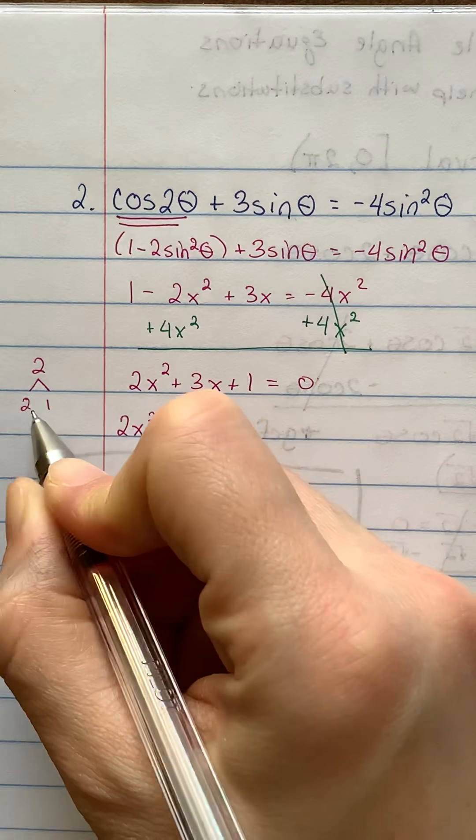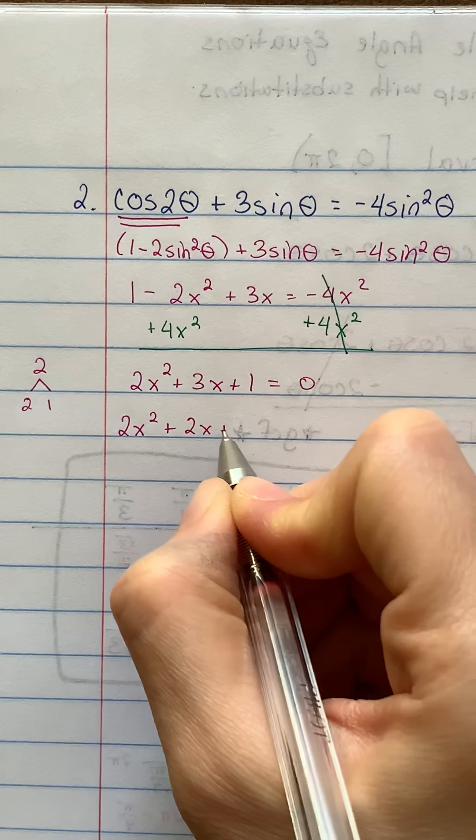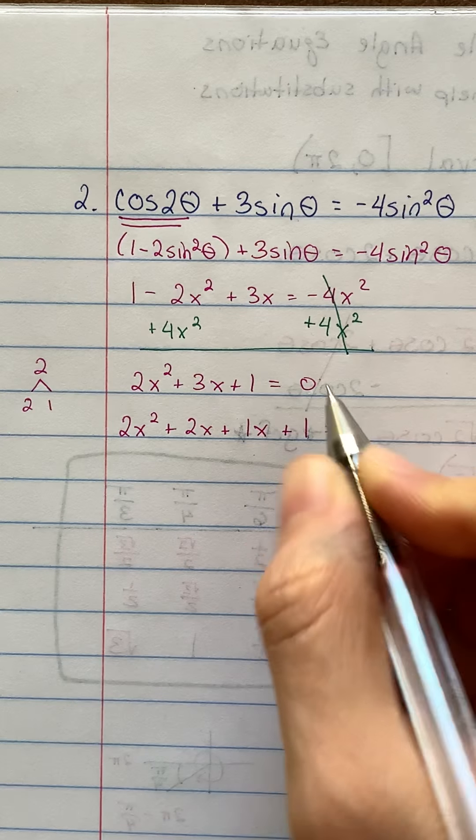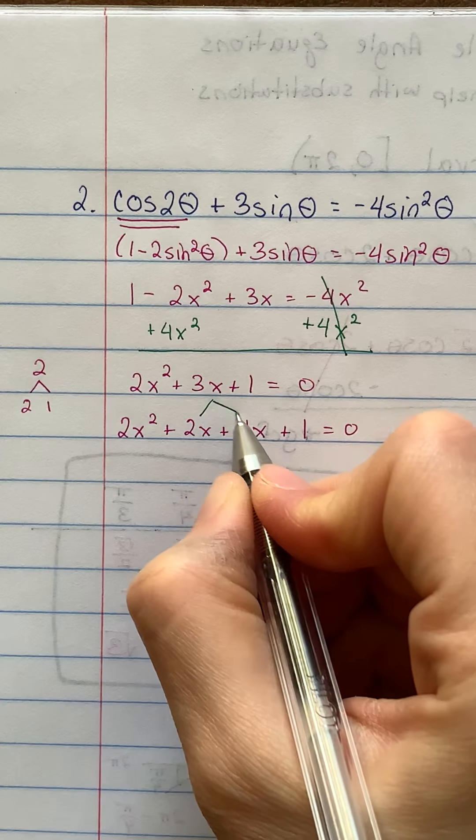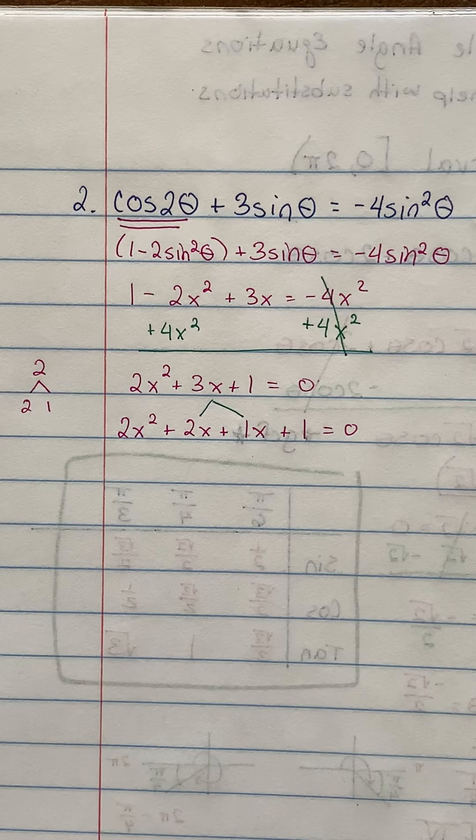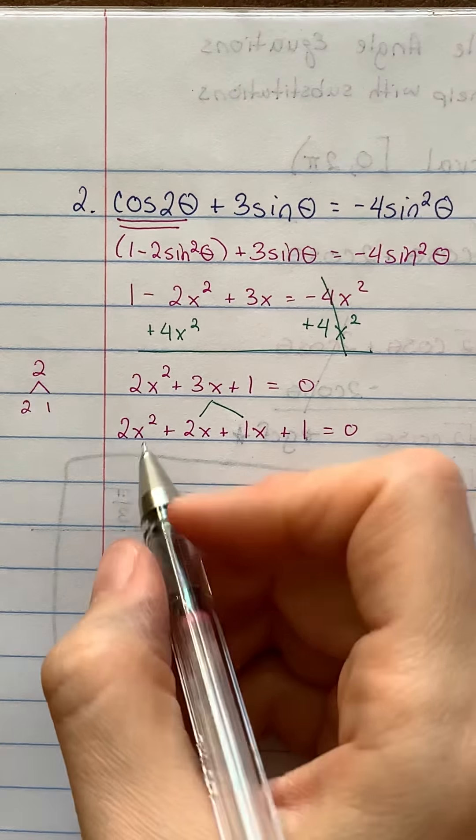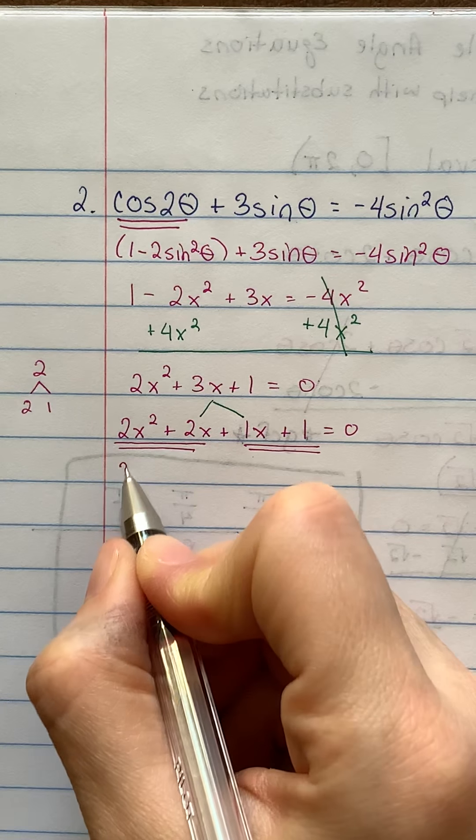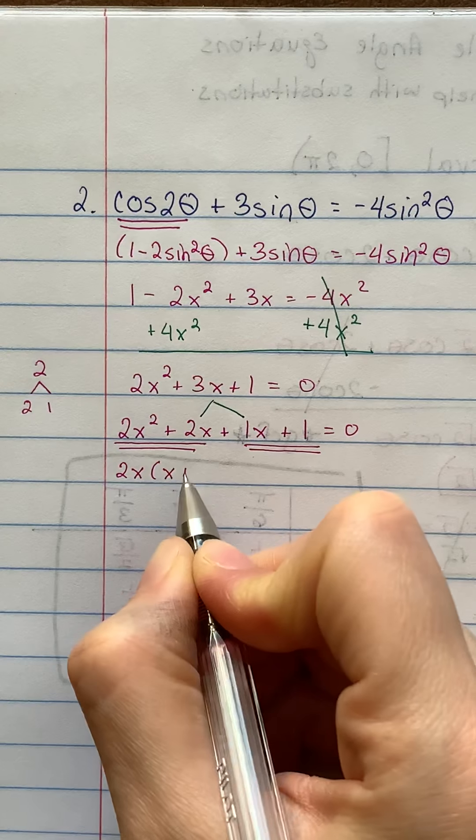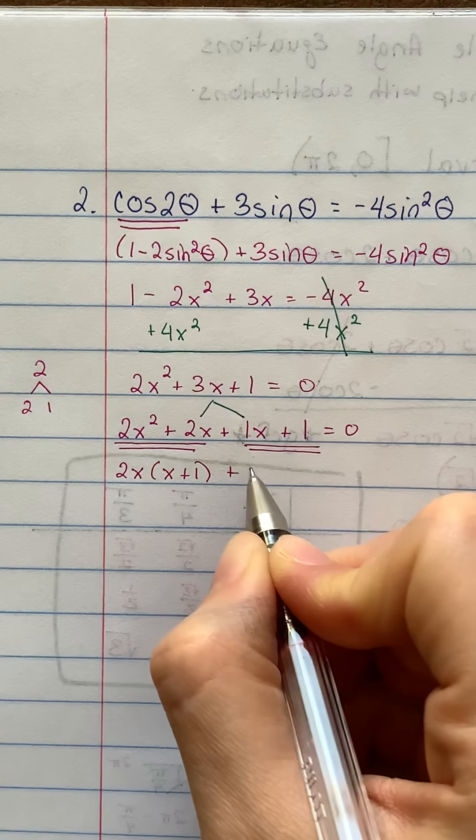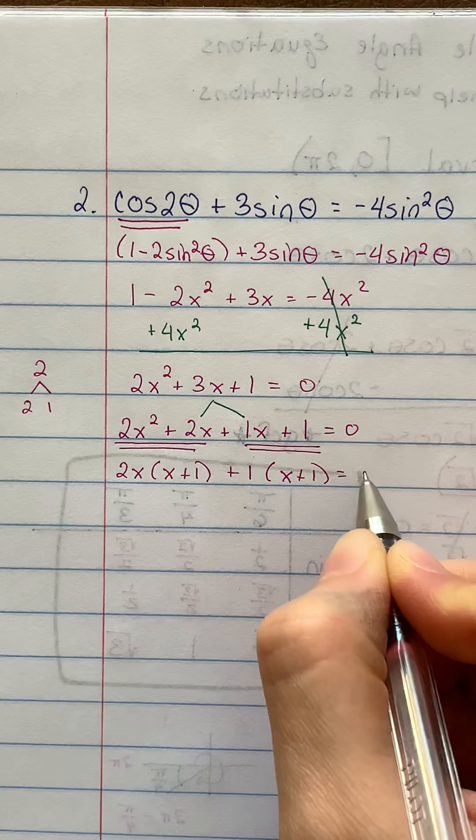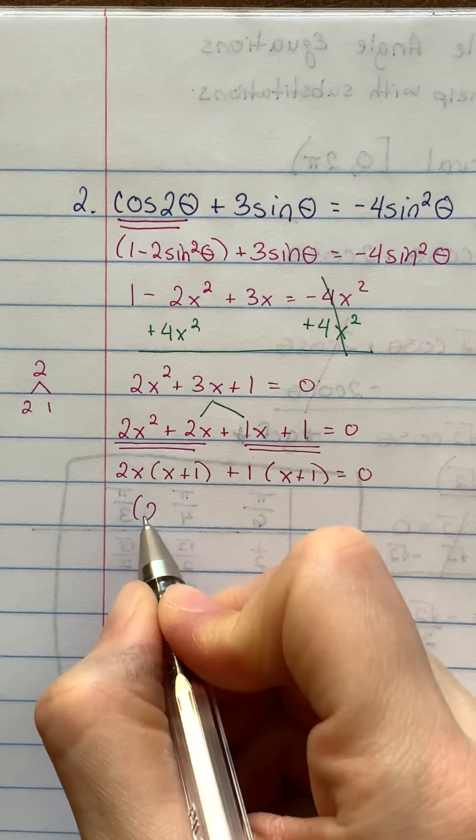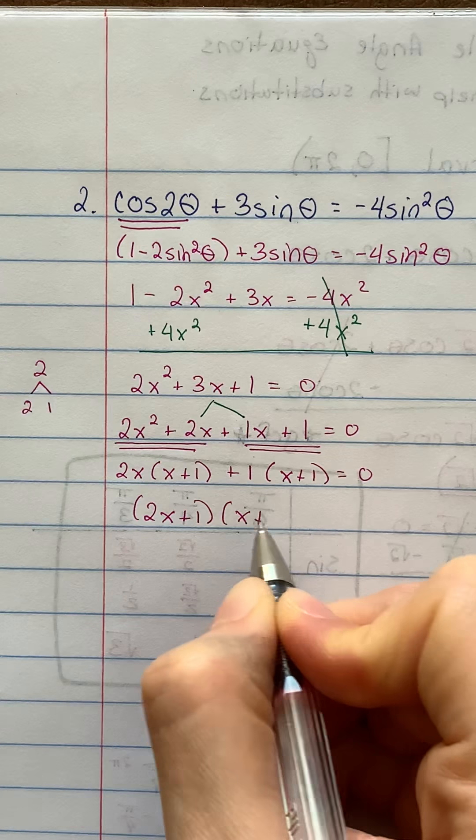Then you look for the factors of 2 that will add up to this middle term. The factors of 2, there's really only two choices, 2 and 1. 2 and 1 do add up to 3, so it's looking pretty good. So I'm going to rewrite this as 2x² plus 2x plus, take my other factor, 1x, plus 1 equals 0. It's called split the middle because I literally took that middle number and I split it into two numbers that would equal that 3x. So what's the point of split the middle? Well, now I can factor by grouping here. So in the first two terms, I'll take out a 2x. I'll have an x plus 1. In the next two terms, I'll take out a 1 and I'll have an x plus 1.